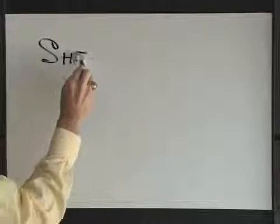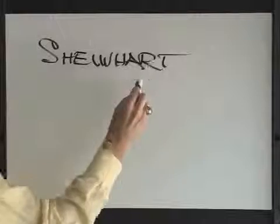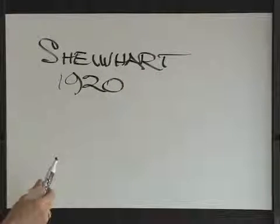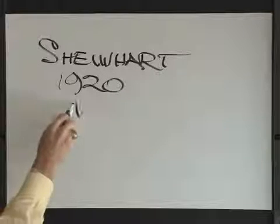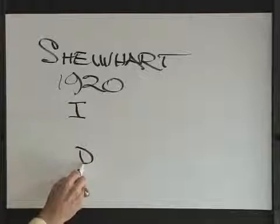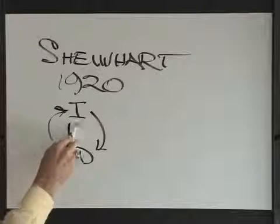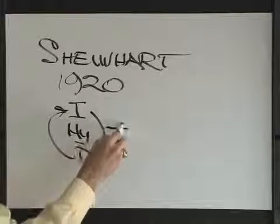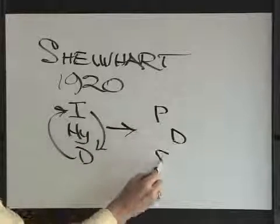Historically, the PDSA cycle was developed by a gentleman by the name of Walter Shewhart. Walter Shewhart, back in the 1920s, working at Western Electric in Cicero, Illinois, and in New Jersey, took the scientific method, that is inductive and deductive thinking, where you go from the specific to the general, from the general to the specific, with hypothesis testing. He took that scientific method and turned it into a very simple notion that when we're going to do something, we're going to plan it, do it, study, and act.